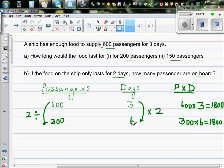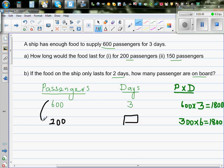So let me change the question now. The question was, if there are 200 passengers, it will last for how many days? So here the answer is, 600 divided by 3 is 200. So you have to multiply this by 3. So the answer is 9.